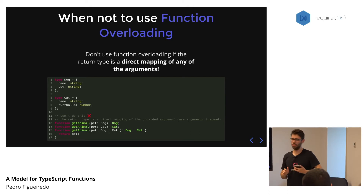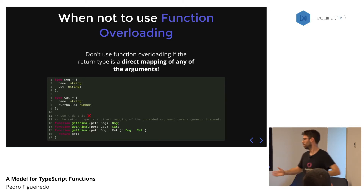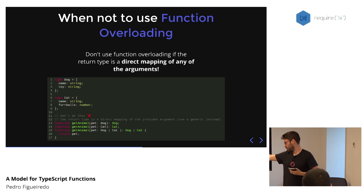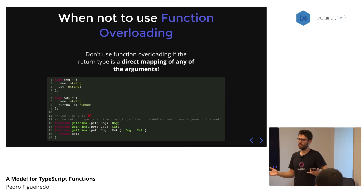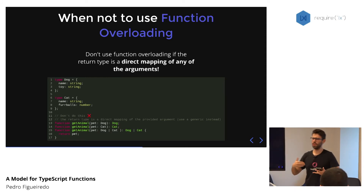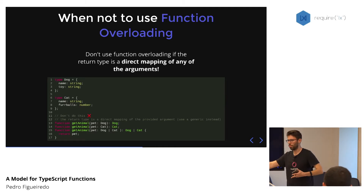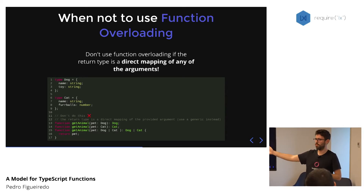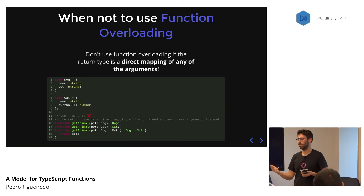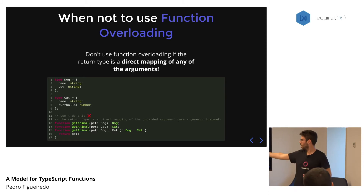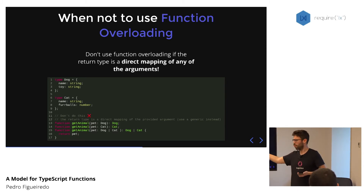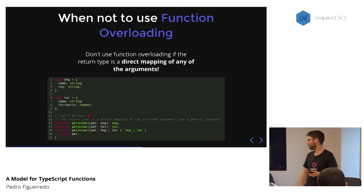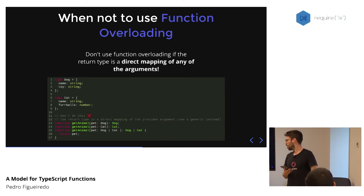There is also a case for when not to use function overloading. Consider a 'get animal' function where you pass in a dog and return a dog, pass in a cat and return a cat. This works fine, but it's not scalable — one day you'll have a horse, then a monkey, then a kangaroo. This will grow a lot for something that is really easy to do with plain generics. That's one case where generics will actually be simpler than the other approaches.